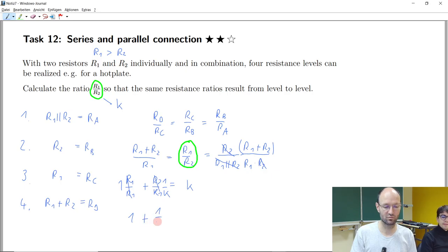And so now we know, one plus one over K should be the same as K. And we found an equation where we have just one unknown, which is K. So the question is, which K fulfills this equation?